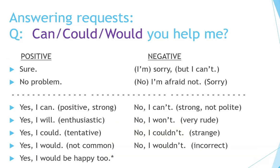Now answering requests requires a little bit of thinking. Let's say the request is 'Can, could, or would you help me?' If you want to give a simple positive response, you can say 'Sure' or 'No problem.' On the negative side, you can say 'I'm sorry, but I can't' or 'No, I'm afraid not. Sorry about that.' Now, we want to be a little careful with using these modals in simple answers. 'Yes, I can' — this is positive and quite strong. If you say 'No, I can't,' it's also strong but in a negative way, so it's not polite — I don't recommend it.